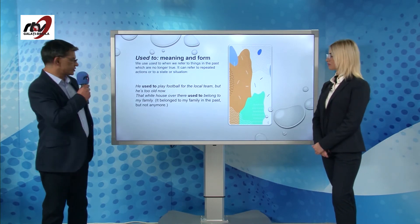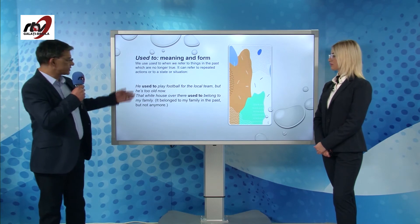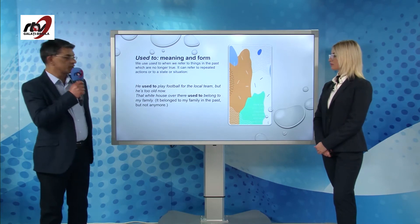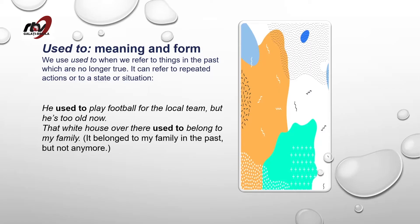You can understand better if you have a look at these examples. 'He used to play football for the local team, but he's too old now.' And the second example: 'That white house over there used to belong to my family.' It belonged to my family in the past but not anymore.